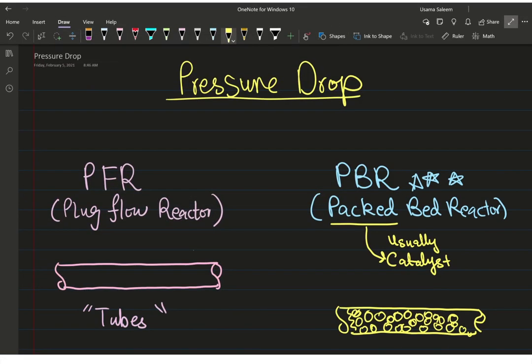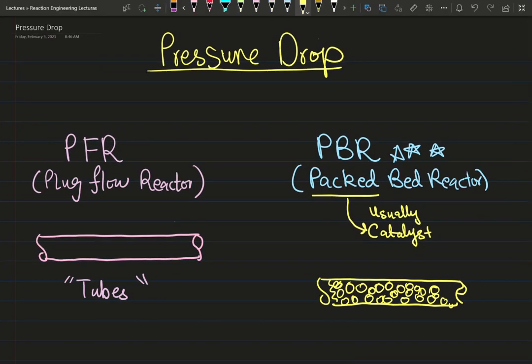Welcome back. In this video we're going to talk about pressure drop in reactors. Up to this point we've been neglecting pressure drop in our design of reactors — whenever we saw pressure drop we assumed isobaric. Now we're going to challenge that assumption. Things are going to get more interesting.